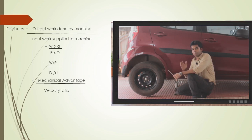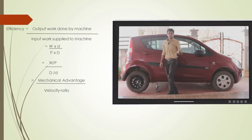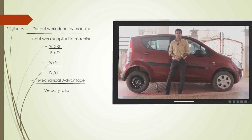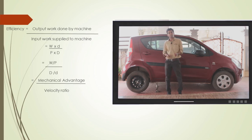Efficiency equals output divided by input, so efficiency = (W × d) / (P × D), which can be rewritten as (W/P) / (D/d) — that is, mechanical advantage divided by velocity ratio. So efficiency equals mechanical advantage upon velocity ratio. If efficiency is 100% — meaning friction is absent — then mechanical advantage equals velocity ratio.